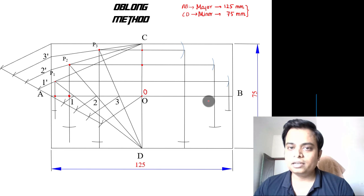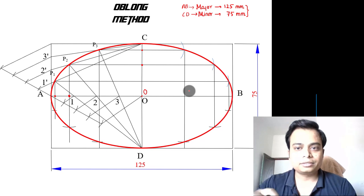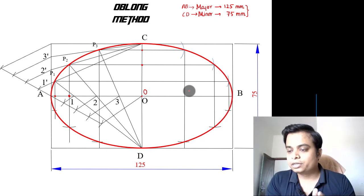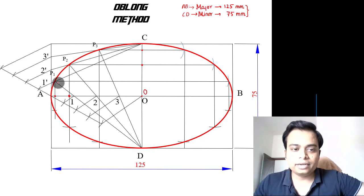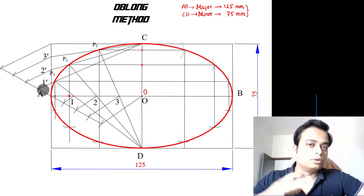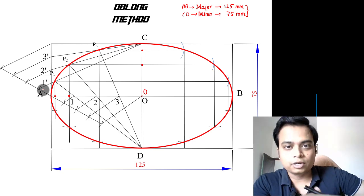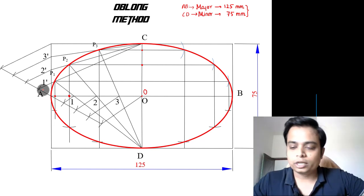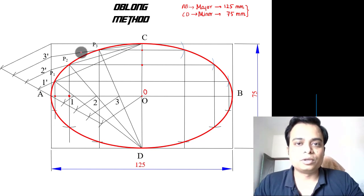Finally, when you join all these points in proper sequence, the curve that you're going to get is an ellipse. That's the oblong method of ellipse construction. Some of you might be wondering how this curve has been made—you can draw it freehand, and if your drawing skills are not that good, you can use a flexi curve or flexible curve, or you can use a French curve to join all these points. Go ahead and solve this. Thank you for watching.